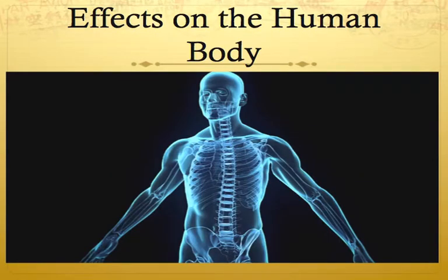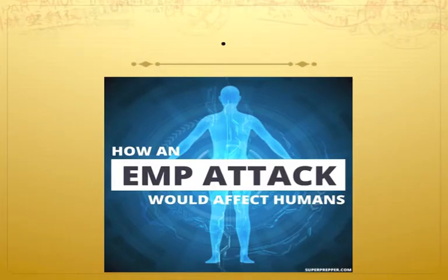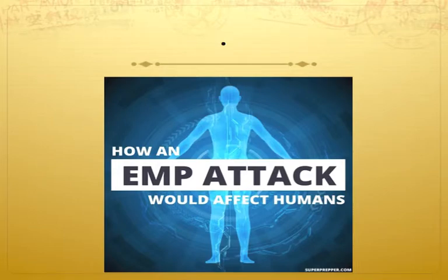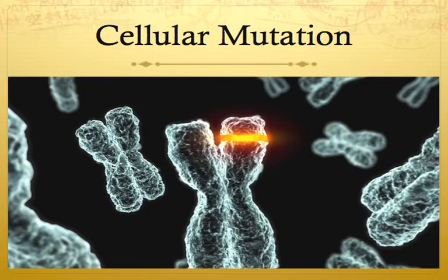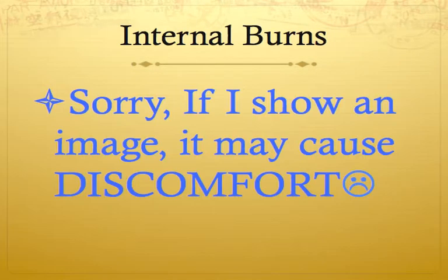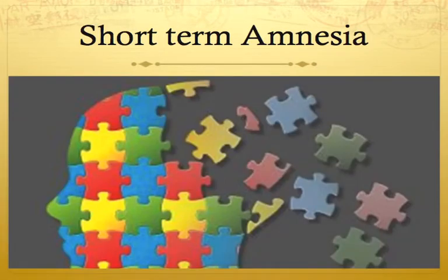We've seen the effects of an EMP on the power grid. Now it's time to see the effects of an EMP on the human body. An EMP not only has the ability to damage electronics in a given area, it is also possible that it can affect the human body directly. Luckily, the human body is not very conductive, so all the effects to humans are possible but aren't likely unless the EMP is exceptionally strong or of an extended duration. But there are some side effects: cellular mutations, nervous system damage, internal burns, and temporary problems with thinking and memory.